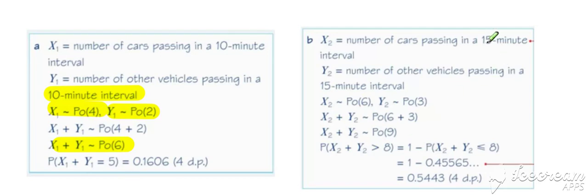In part b, we've got a 15-minute interval. So again, we adjust X and we adjust Y for a 15-minute interval, and we can combine them. So we get an average value of 9 occurrences in a 15-minute period for any vehicle, and we work out the probability that that is greater than 8 by using our calculator.